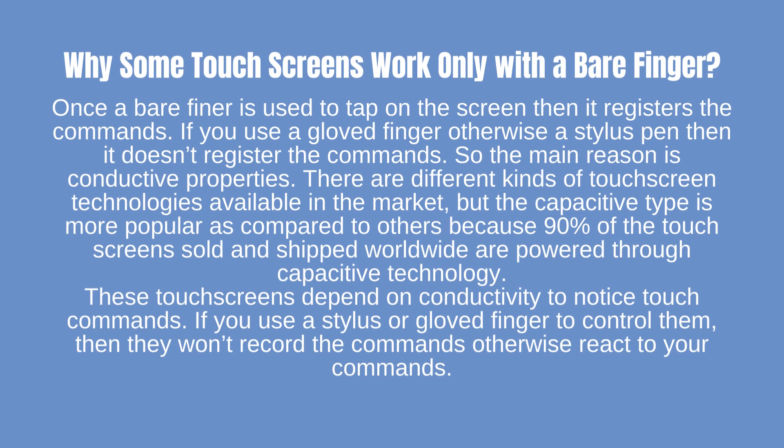Why do some touchscreens work only with a bare finger? When a bare finger is used to tap on the screen it registers the commands. If you use a gloved finger or a stylus pen, it doesn't register the commands. The main reason is conductive properties. Capacitive type is the most popular, as 90% of touchscreens sold worldwide are powered through capacitive technology. These touchscreens depend on conductivity to notice touch commands, so a stylus or gloved finger will not record or react to commands.